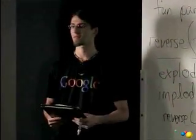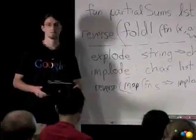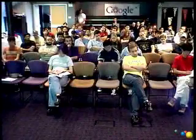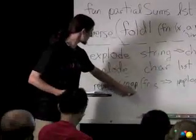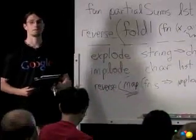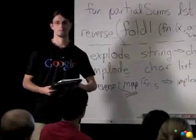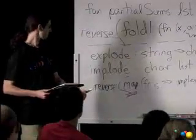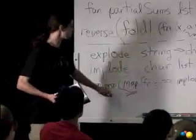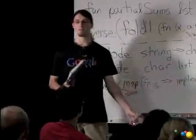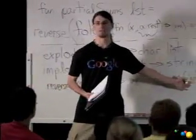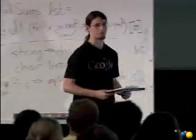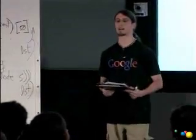How many maps does this actually use? There is one map in this function which is explicitly laid out. But how many folds are there? It's either three or four depending on how you count, because reverse and implode can both be implemented with fold. And if you think slightly more creatively over the implementation of strings themselves, that's also a fold operation. So we can create a whole variety of higher level functions by building on top of this fold primitive.